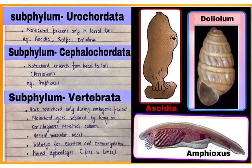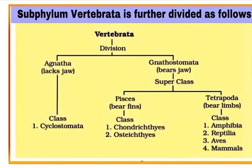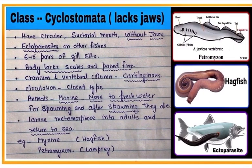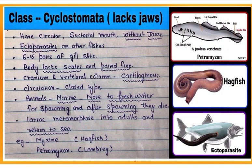Chordata is further divided into different subphyla: Urochordata, Cephalochordata, and Vertebrata. Subphylum Vertebrata is further divided as shown in the table. The first class is Cyclostomata.